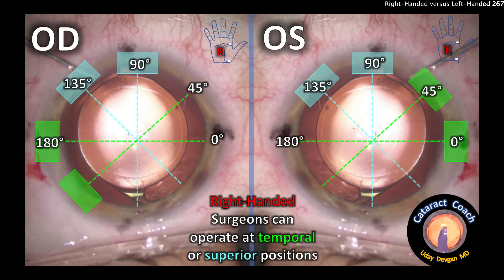The right-handed surgeon is able to make a temporal incision somewhere between 180 or zero degrees and up to 45 degrees, and if sitting superiorly, again between 90 and 135. You can also shift the patient's head and shift the gurney to change the angle even further — so instead of 45 degrees, you could probably do 60 degrees.